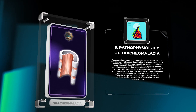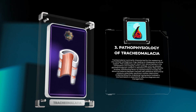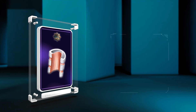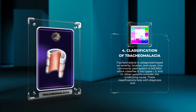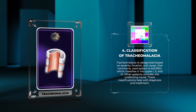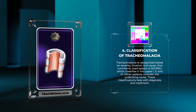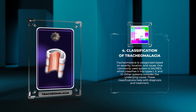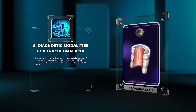Understanding the underlying mechanisms involved in tracheomalacia is essential for effective diagnosis and management. Tracheomalacia is categorized based on severity, location, and cause. One commonly used system classifies it into types one, two, and three, while other systems consider the underlying cause. These classifications help guide diagnosis and treatment.